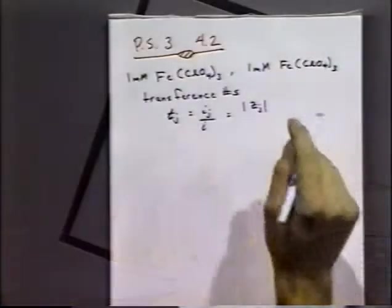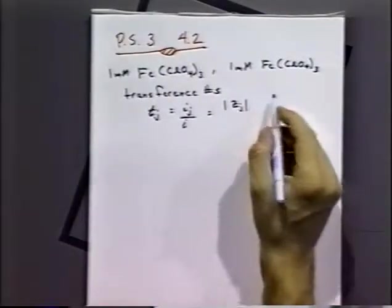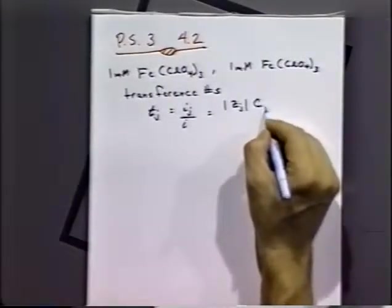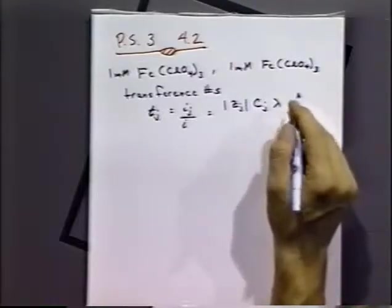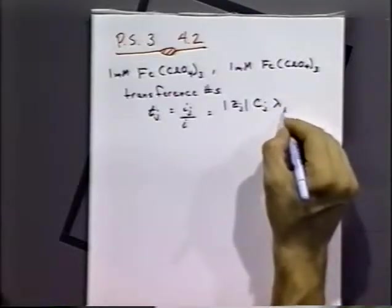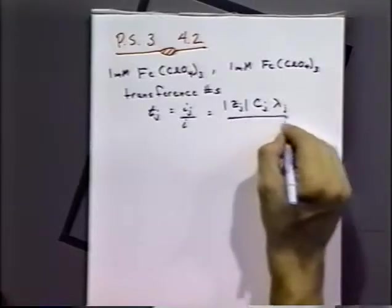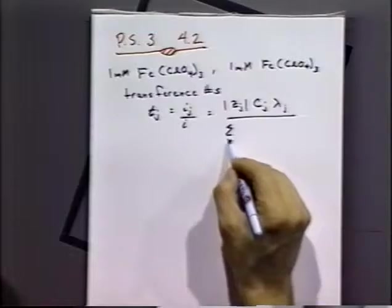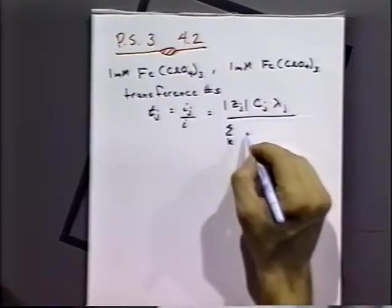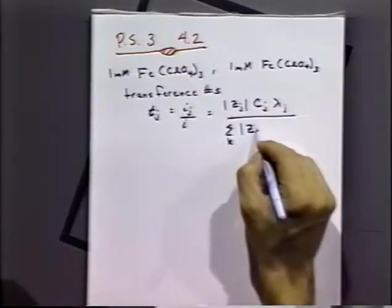And so the definition of that was the absolute value of the charge on the ion, concentration of the ion, and the limiting equivalent conductance of that ion. And we would take that and divide it through by the sum of the transference numbers of all the other species in solution.